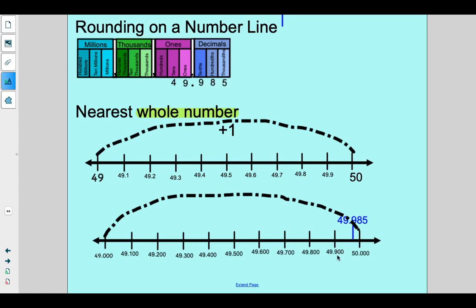Because we have 49 and nine hundred eighty-five thousandths. And we know that this is 49 and nine hundred thousandths. And this is just 50, right?